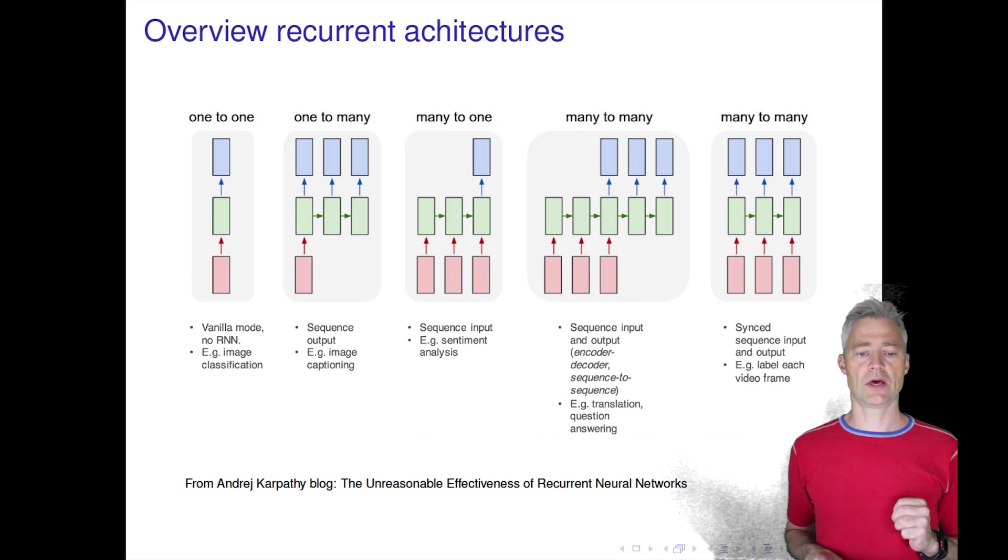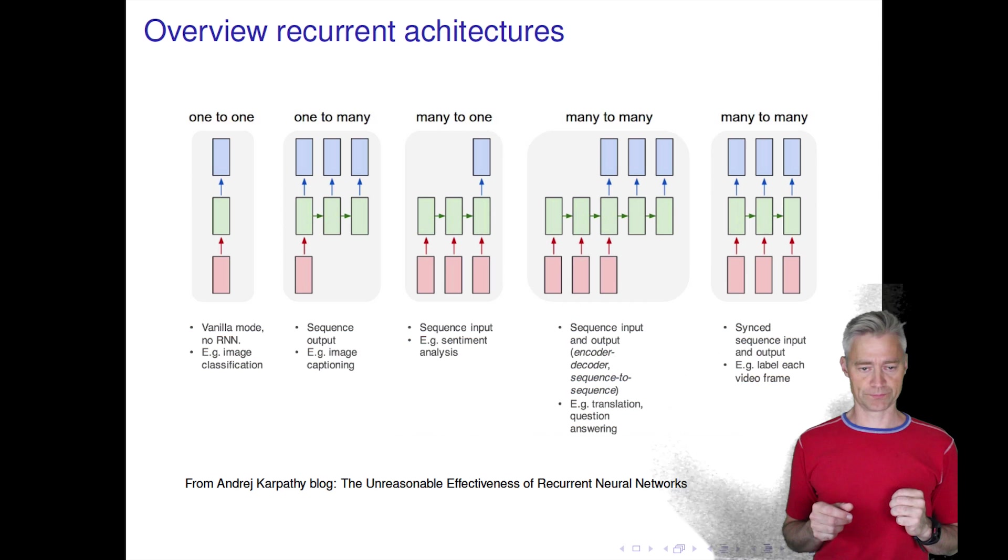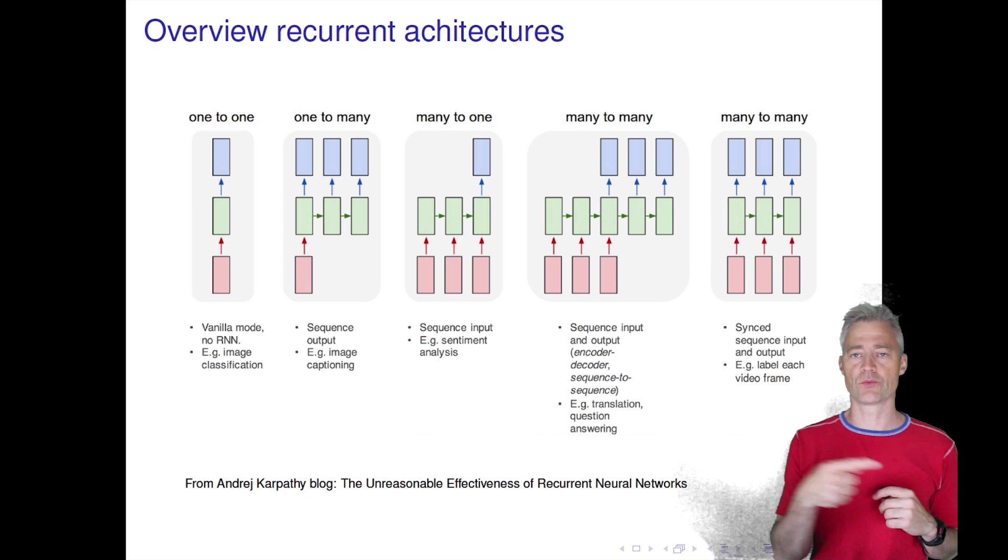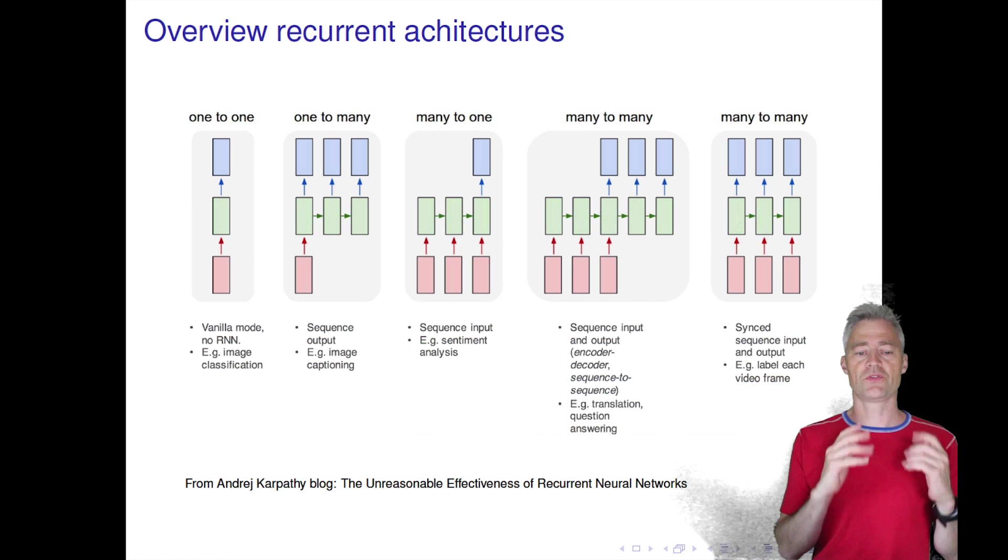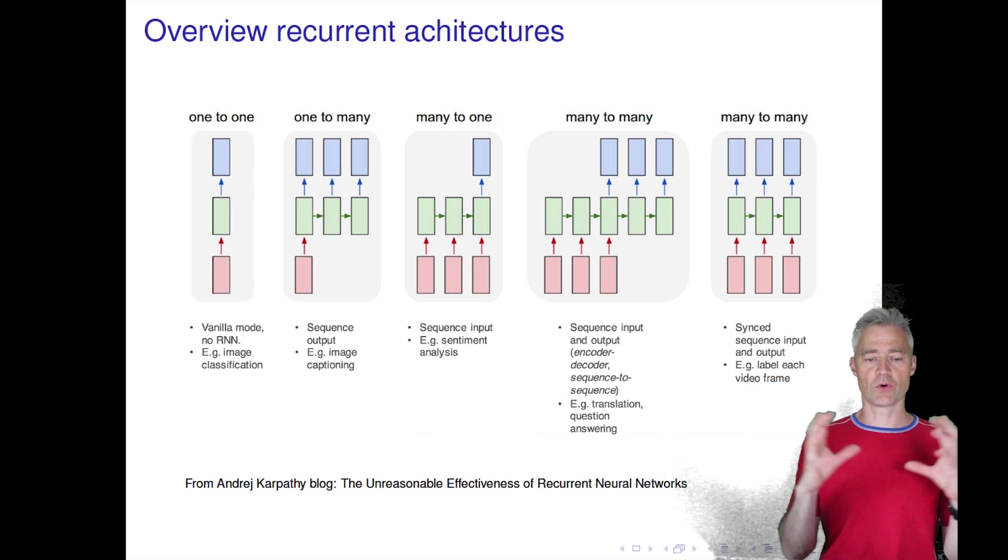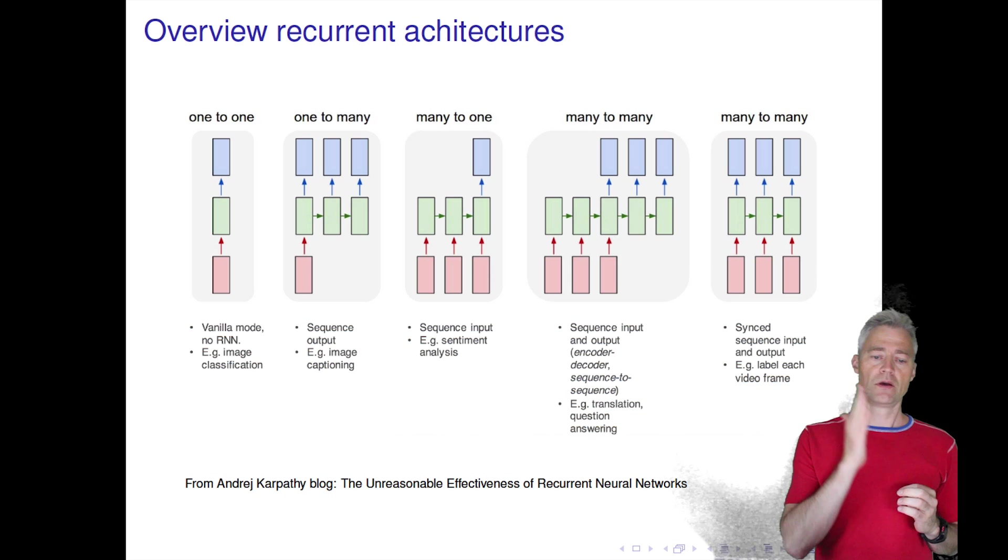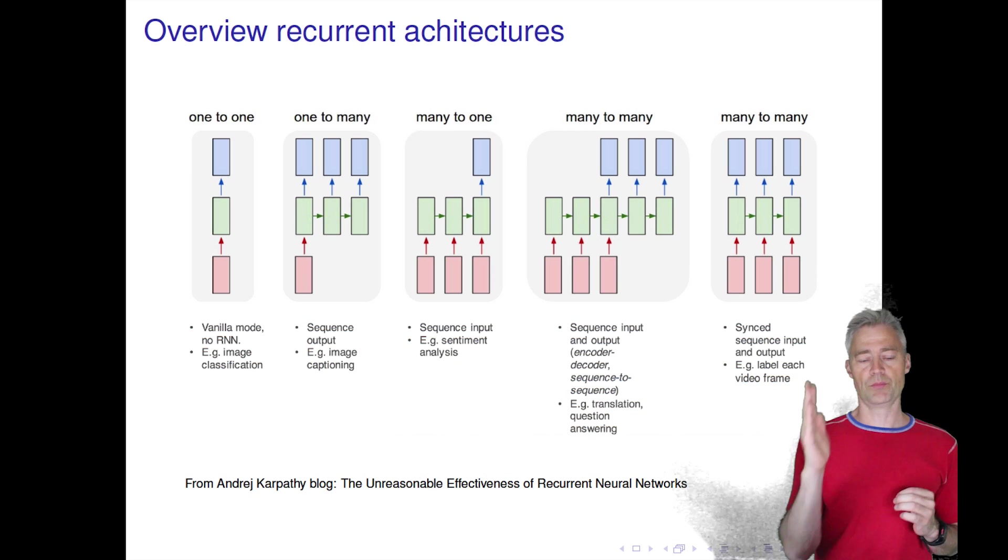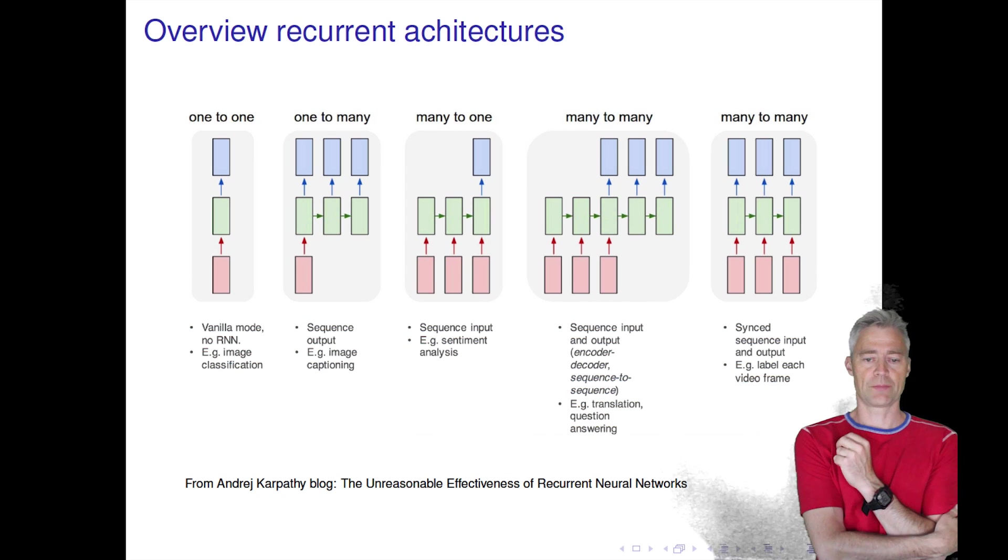The first recurrent model is one where we have one input and we want to generate a whole sequence of outputs. We can use this architecture and we can also make bidirectional variations. One example could be that we give the model an image as input and then we want the model to generate a caption for that image, where each position in the recurrent model will be one letter or one word from the caption.